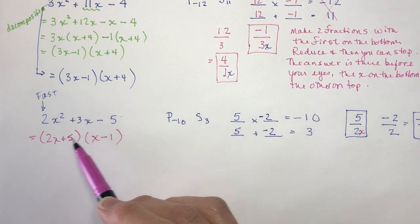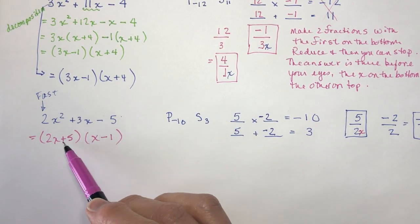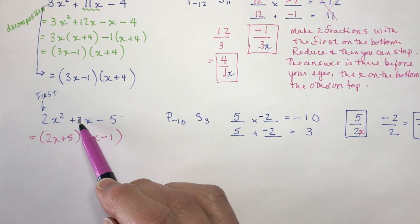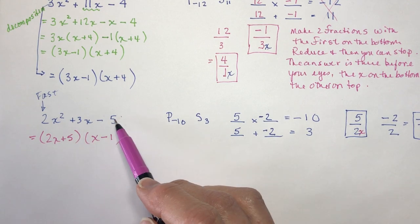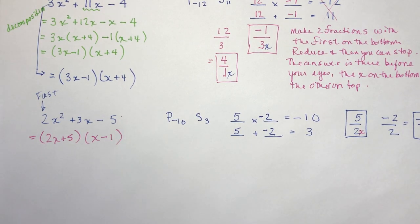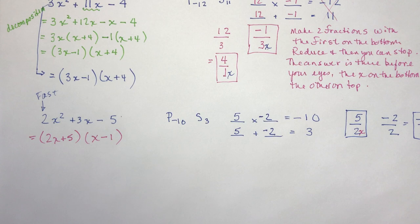Double check: 2x squared, minus 2x plus 5x is 3x, and 5 times minus 1 is minus 5. So now that you're smiling, because you're saying, this is really easy — Ms. Havrot is genius! No I'm not, I've just taught math for a long time.